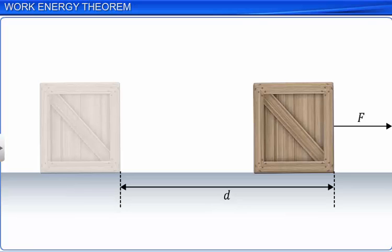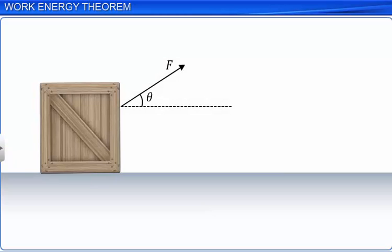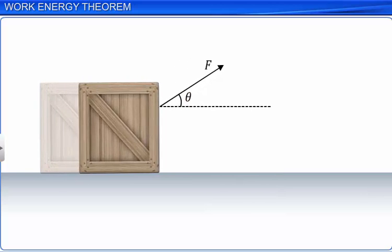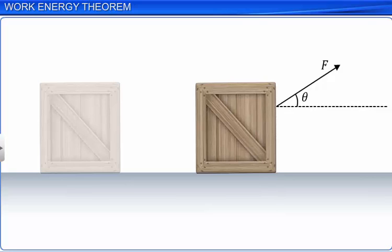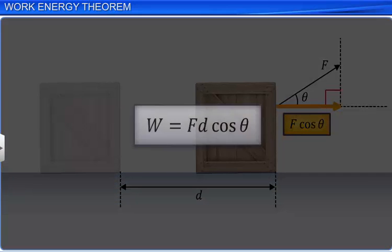In a second case, where the direction of the force is not along the direction of the motion of the block, the force makes an acute angle theta with the horizontal. In this case too, we observe that the block moves in the horizontal direction only. The total amount of force is not being utilized to move the block — only the component of the applied force along the direction of the displacement is responsible for the motion of the block. Thus, the work done on the block by the force is the product of F cos theta and displacement.